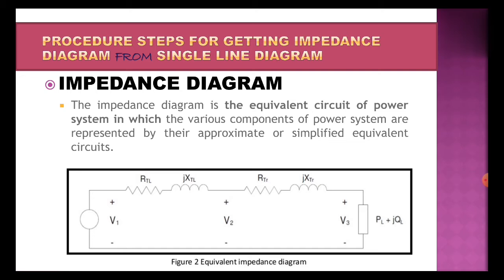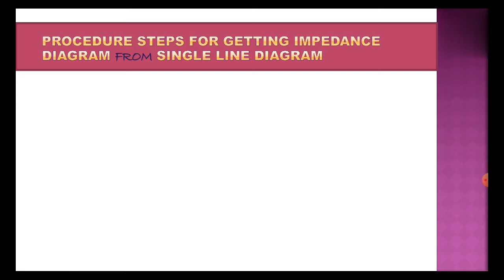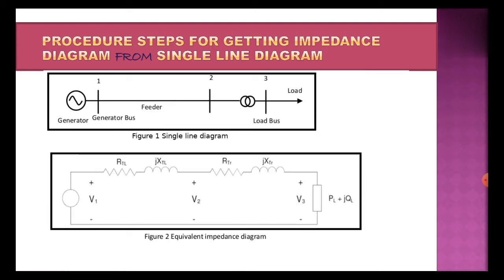An important point is that this impedance diagram is obtained in order to solve the network. It is obtained by replacing the equivalent circuit of each and every element present in the power system. The power system is represented in the single line diagram, and for every component in that single line diagram, I have replaced it with an equivalent circuit element. The generator is represented by a voltage source, and the transmission line is represented with its equivalent circuit element — the impedance value Z, represented as R plus jX_L.